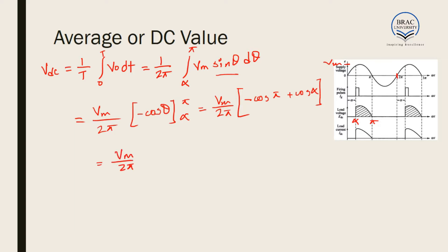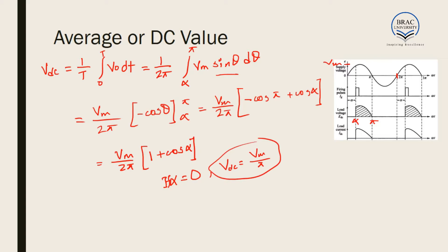So we get VDC equal to Vm over 2π times (1 plus cos α). We can notice that if alpha equals 0, VDC equals Vm over π — since cos 0 equals 1 — which is the same as the uncontrolled rectifier. If alpha equals π, cos π is minus 1, so 1 plus (minus 1) cancels and we get VDC equal to 0, which is obvious from this expression.